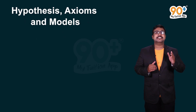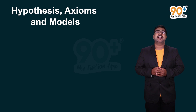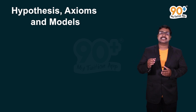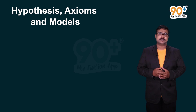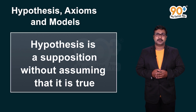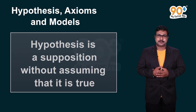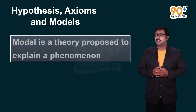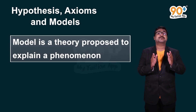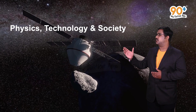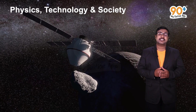Our next topic is hypothesis, axioms, and models. In maths and physics, most concepts are based on assumptions. A hypothesis is a supposition without assuming that it is true. Axioms are self-evident truths. A model is a theory proposed to explain a phenomenon.